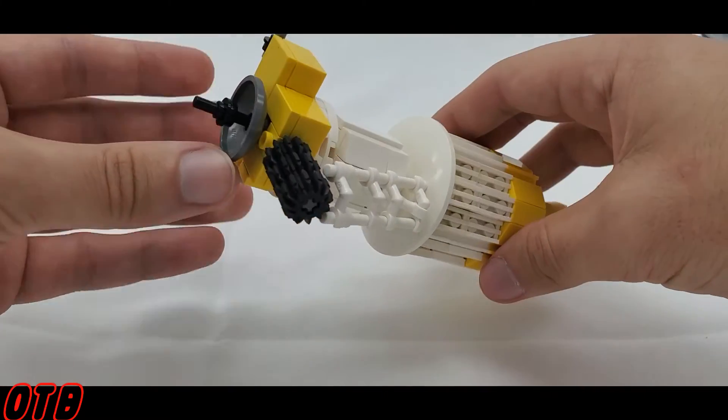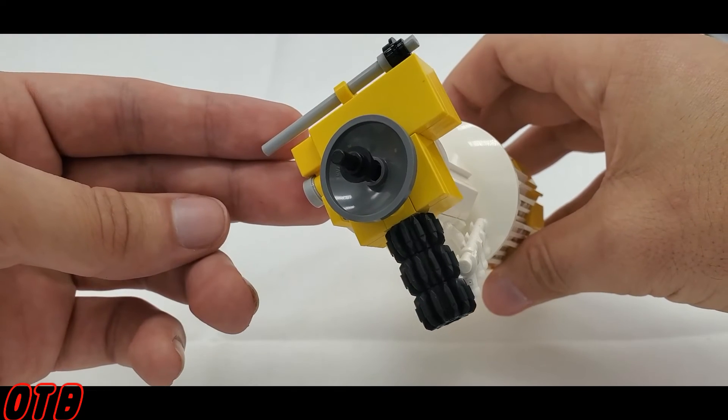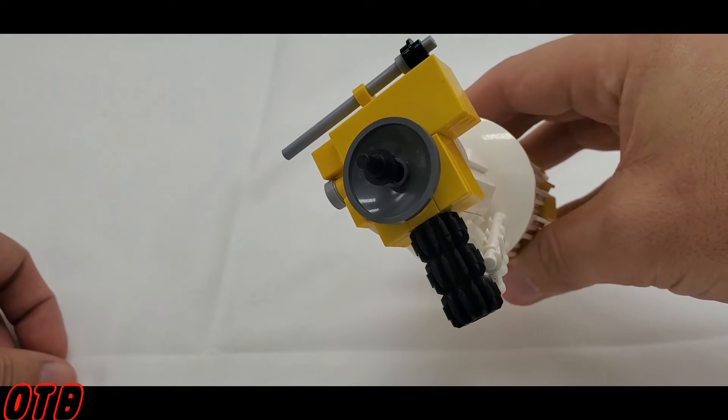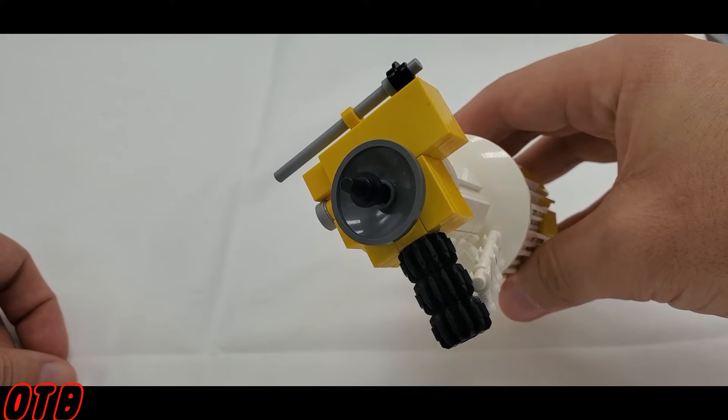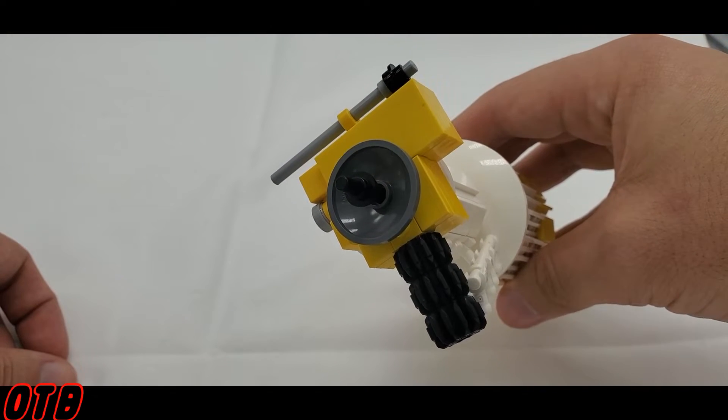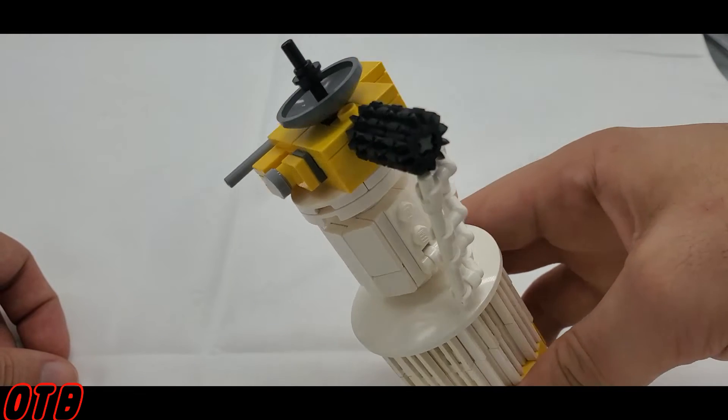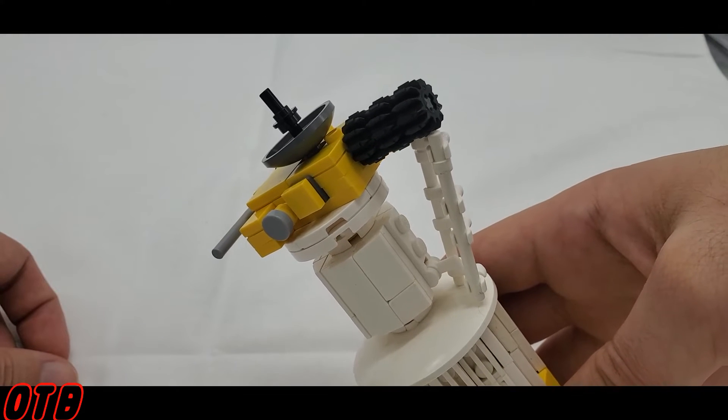Also, for the record, the Ulysses space probe isn't actually this entire thing. It's really just this yellow part at the top. The rest of this is kind of just what it used to get where it was going. Like I said, it wasn't a simple thing.